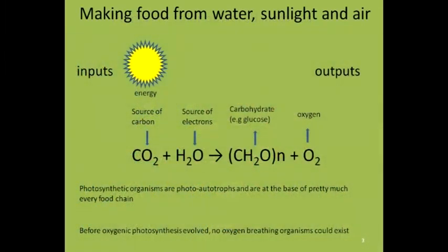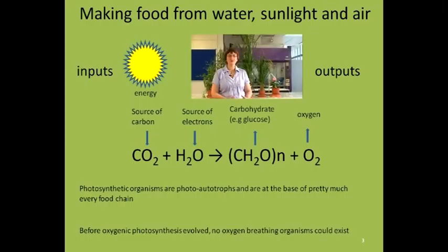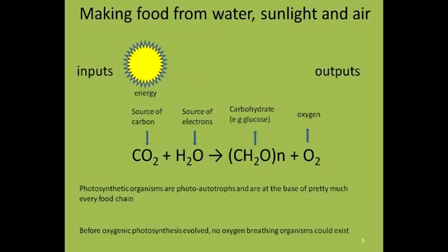Plants use the energy from sunlight to extract electrons from water, releasing oxygen in the process. These electrons are passed on via a series of intermediate compounds, eventually to reduce carbon dioxide to carbohydrate, which can then be converted by the plant into all manner of biological molecules. Photosynthetic organisms are at the base of pretty much every food chain. Before oxygenic photosynthesis evolved, no oxygen-breathing organisms could exist on the planet.